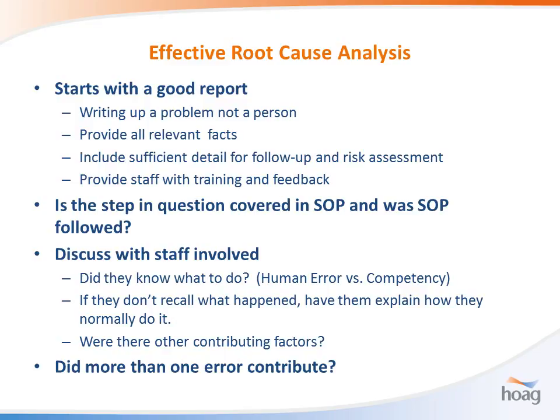How to conduct an effective root cause analysis: it starts with a good report, which requires a lot of in-servicing with employees. Constantly remind them — and this is the basis of a just culture — that you're writing up the problem, not the person. Make sure you provide all relevant facts and include sufficient detail for follow-up and risk assessment. The next thing to ask when an event happens is: is this step covered in the SOP, and was the SOP followed? This is particularly important in the blood bank — the FDA investigator will say, let me see the SOP step that wasn't followed.